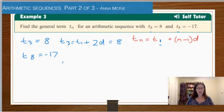And the 8th term is equal to t1, so I'm using this again, and now looking at our n minus 1. Because it's the 8th term, n minus 1 will give us 7, so plus 7 lots of the difference, and that's equal to negative 17.